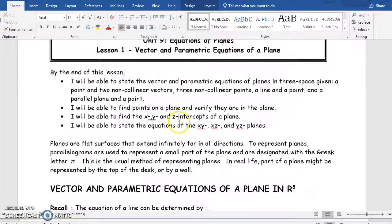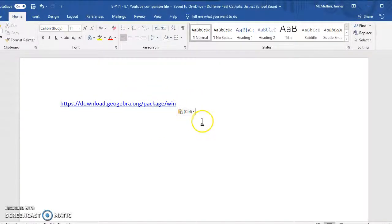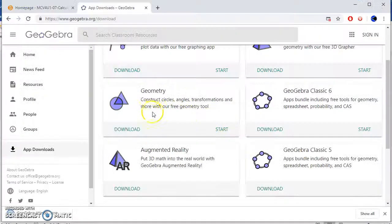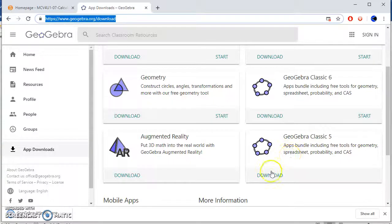For today's lesson, I think it's probably a good idea to get GeoGebra if you have your computer with you. You don't need it, but I think it will help if you can follow along. So you can go to geogebra.org/download. I would recommend you get GeoGebra Classic 5. Just hit download, and it will appear down here at 65 megs, download it and install it.